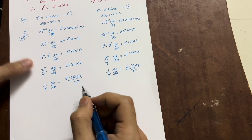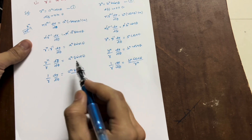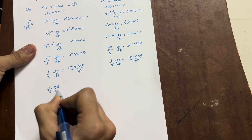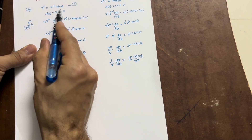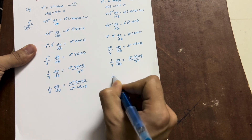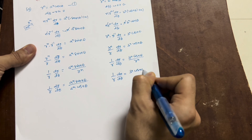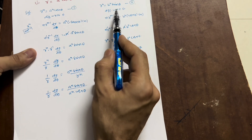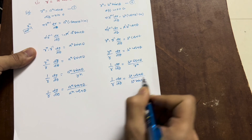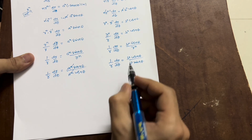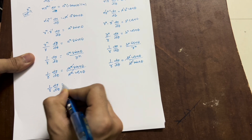Now substituting the given values: r^n = a^n·cos(nθ) into the first equation gives (1/r)·dr/dθ = −a^n·sin(nθ) / (a^n·cos(nθ)). The a^n terms cancel. For the second, r^n = b^n·sin(nθ), so (1/r)·dr/dθ = b^n·cos(nθ) / (b^n·sin(nθ)). The b^n terms cancel.